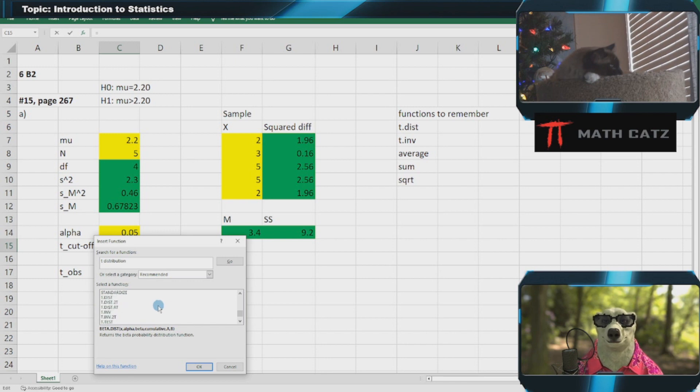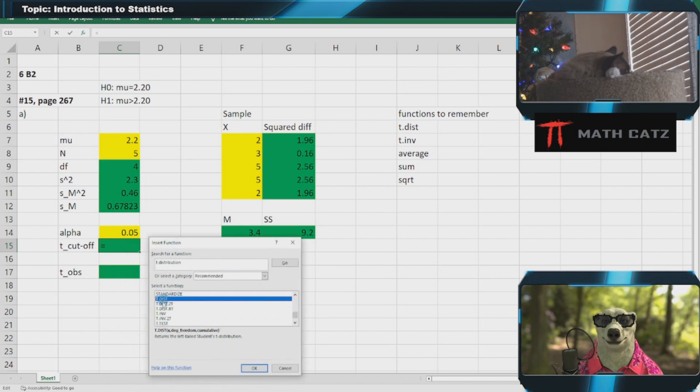I have the left-tailed, two-tailed, and right-tailed t distributions. It doesn't really matter. You can use one and make your own adjustments for the alpha. Realize this is always sweeping it from the left, and that's fine. You don't have to mix things up too much.